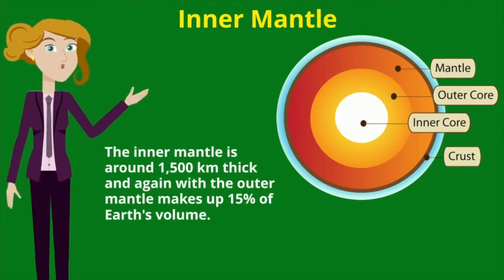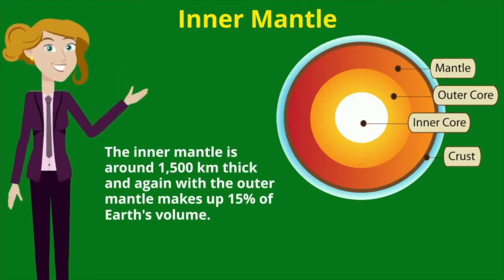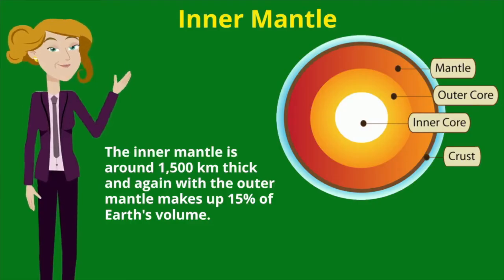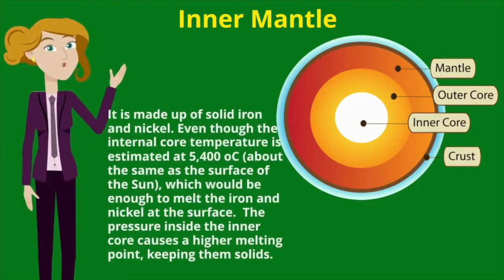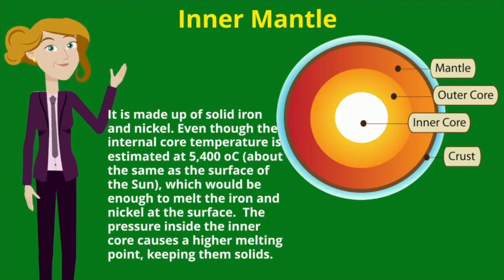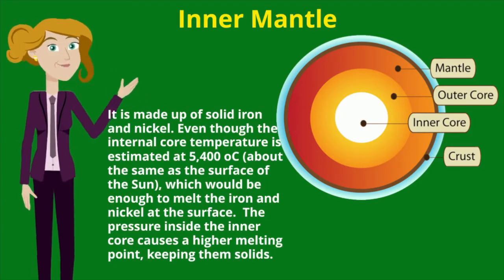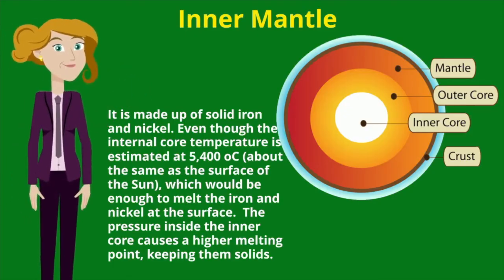The inner core is around 1,500 kilometers thick and, together with the outer core, makes up 15% of the earth's volume. It is made up of solid iron and nickel. And even though the inner core temperature is estimated at 5,400 degrees Celsius — which would be enough to melt the iron and nickel at the surface — the pressure inside the inner core causes a higher melting point, keeping them solids.